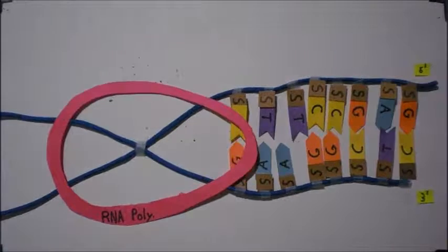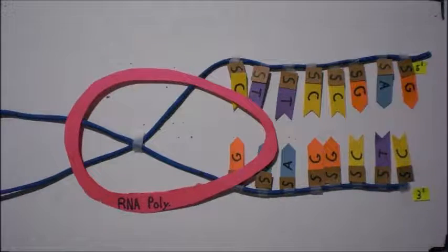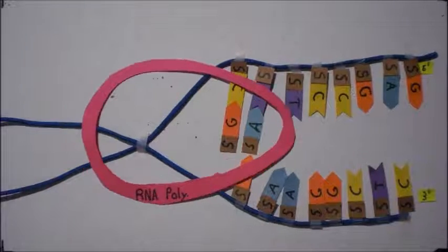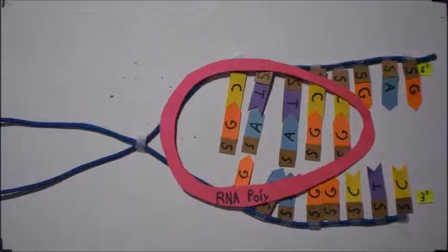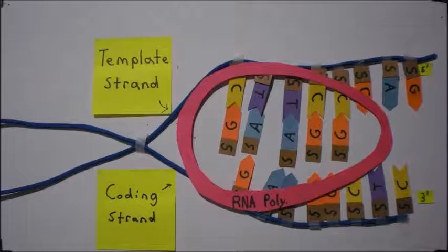RNA polymerase reads the transcribing strand from 3' to 5', but transcribes newly made RNA from 5' to 3'. In RNA, adenine is complementary to uracil rather than thymine.